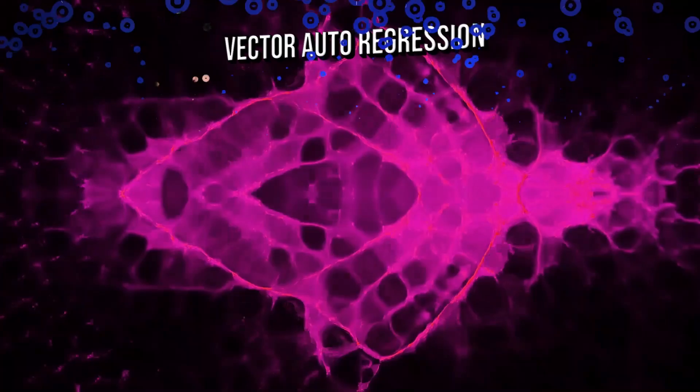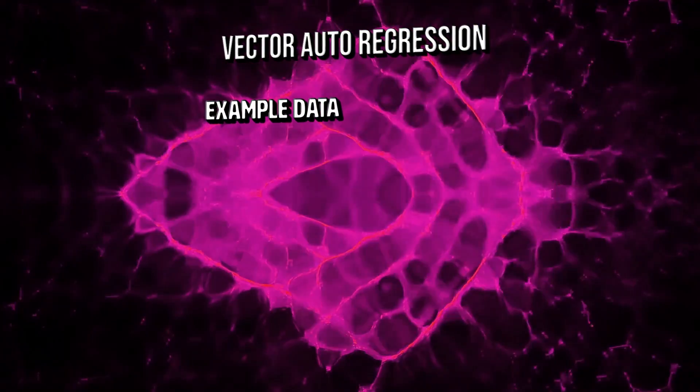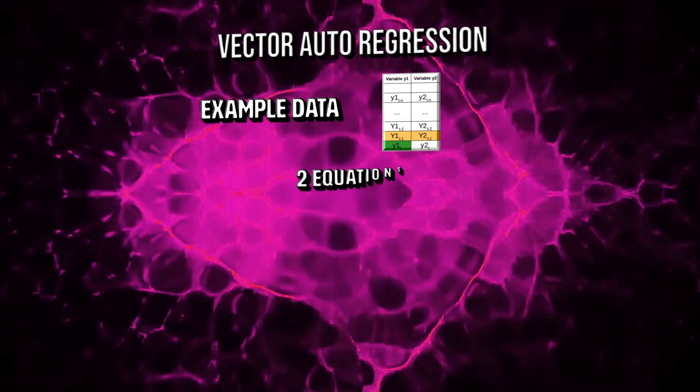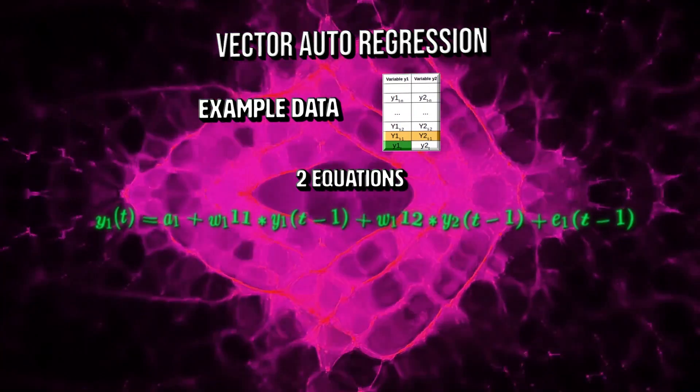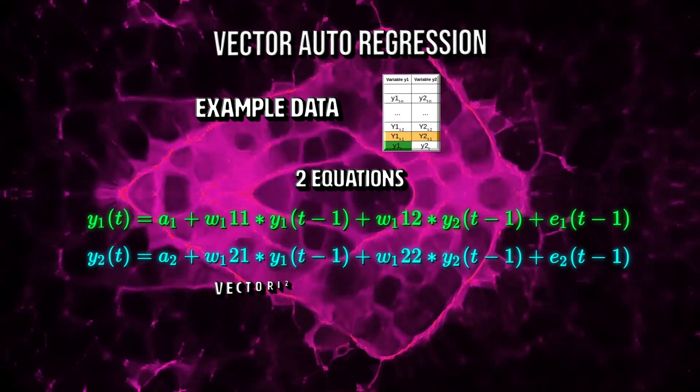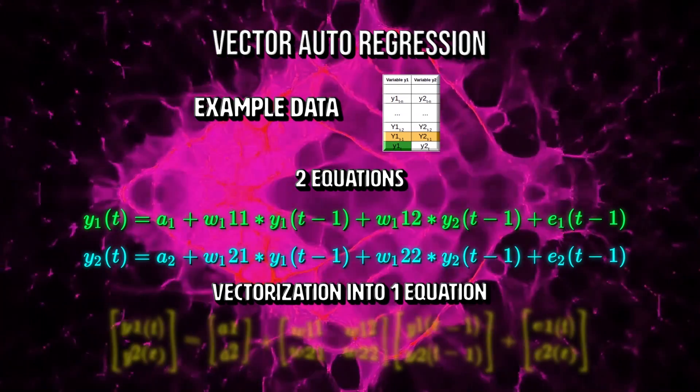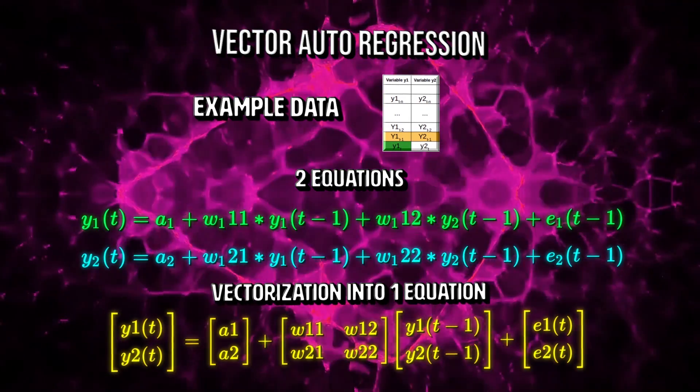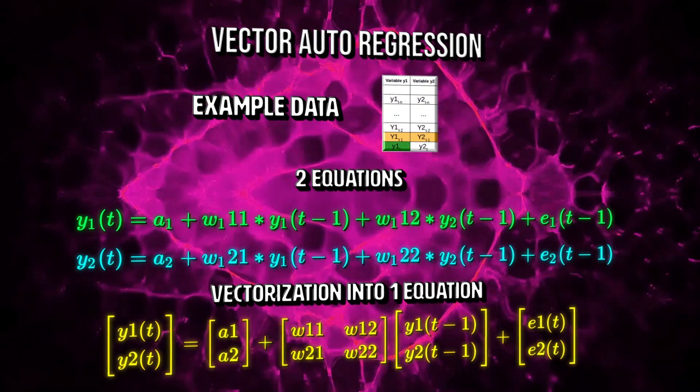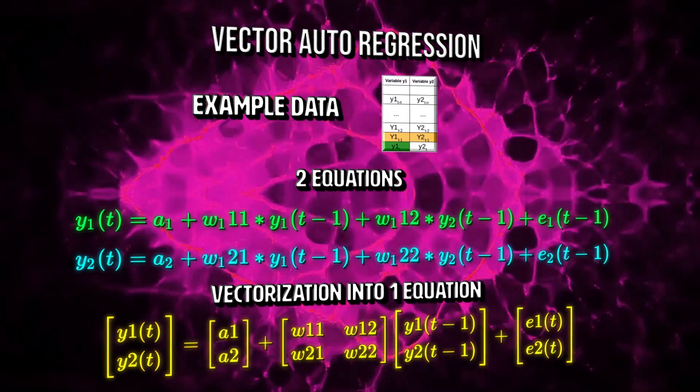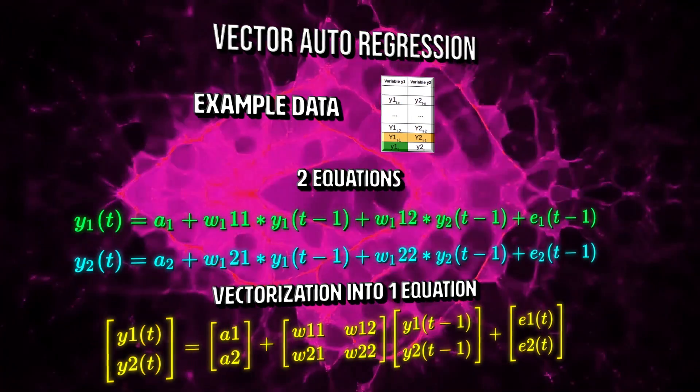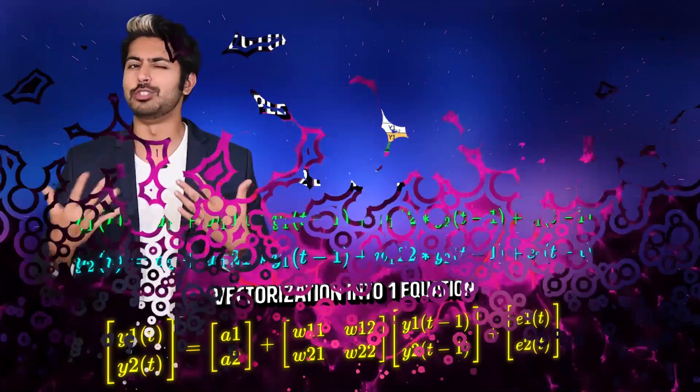One of the most commonly used methods for multivariate time series forecasting is called Vector Autoregression or VAR. In the VAR model, each variable is a linear function of the past values of itself and the past values of all other variables. If we have two variables, y1 and y2, and we need to forecast the value of these two variables at a given time, we can represent the relation between both as such. We've got constant terms, coefficients, and error terms here. In order to use the multiple variable terms in each equation, we'll use vectors. But what else could we do here?